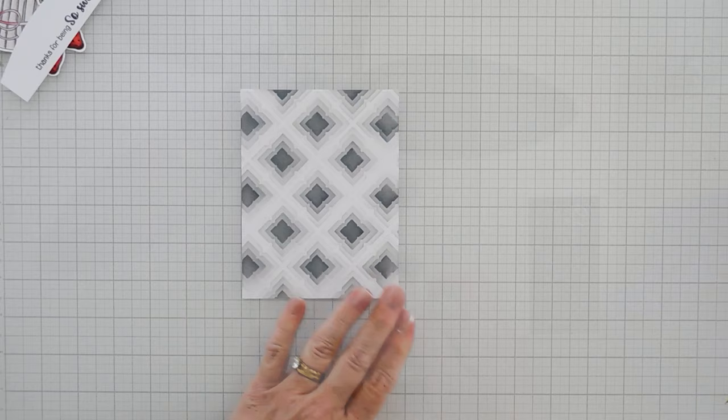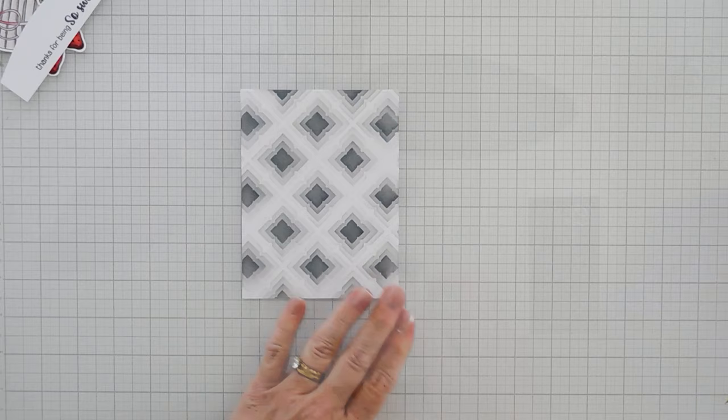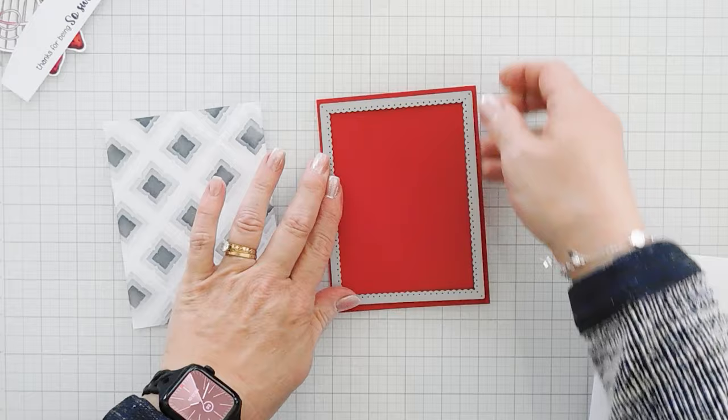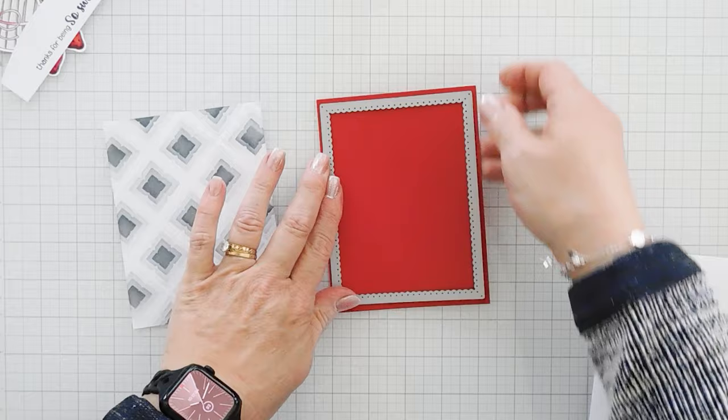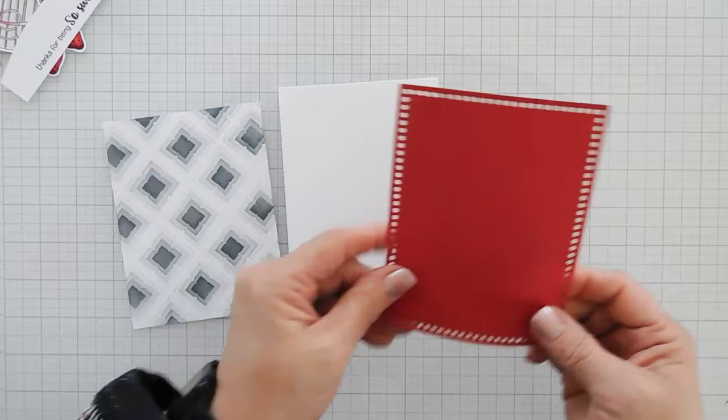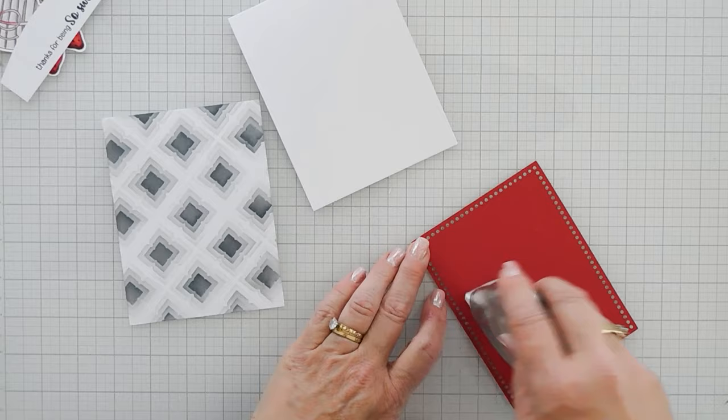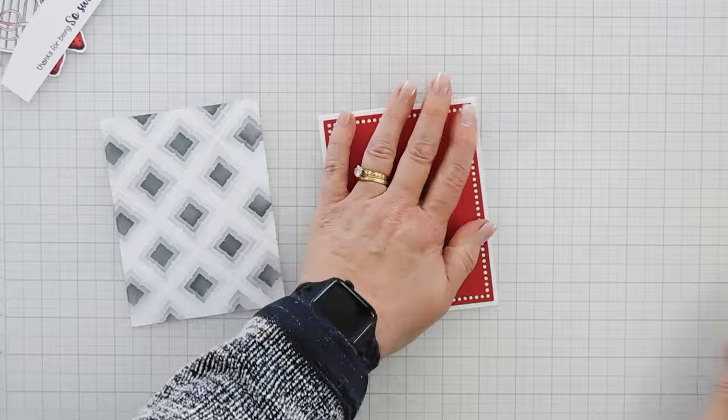For my background, I'm going to be using some red cardstock. And I'm also going to bring in a die set from Simon called the A2 Marquee. These give me dotted detail around my background. I'm going to run this through my die cut machine. And Spellbinders just actually has a die set that does almost the same thing. But the dots are a little bit smaller. But I'm going to go ahead and adhere this to the front of my card base, just using my tape runner. I'm going to use a little bit of a white border, about an eighth of an inch, I would say, on my card base, kind of framing it. And I love frames on my cards.